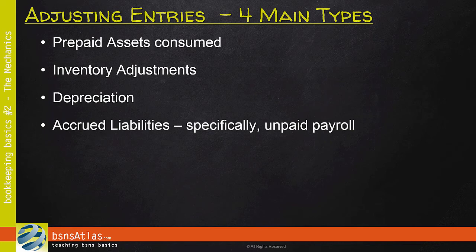The fourth type covers adjusting for accrued liabilities — and more specifically, accounting for unpaid payroll at the end of a period. There may be other reasons beyond these four, but let's start with these. Covering these four main ones first will help get your thinking flowing on other adjustments you may specifically need. After we cover the four main reasons, we'll spend a little time looking at how we work with our worksheet tool.